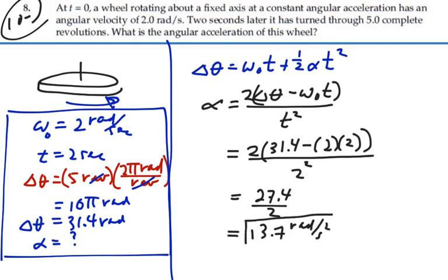13.7 radians per second squared for the angular acceleration of the wheel as it goes from two radians per second and subtends through 31.4 radians. 13.7 radians per second squared.